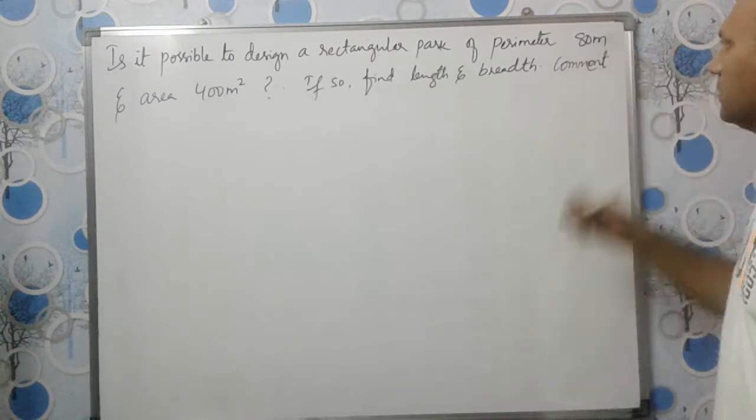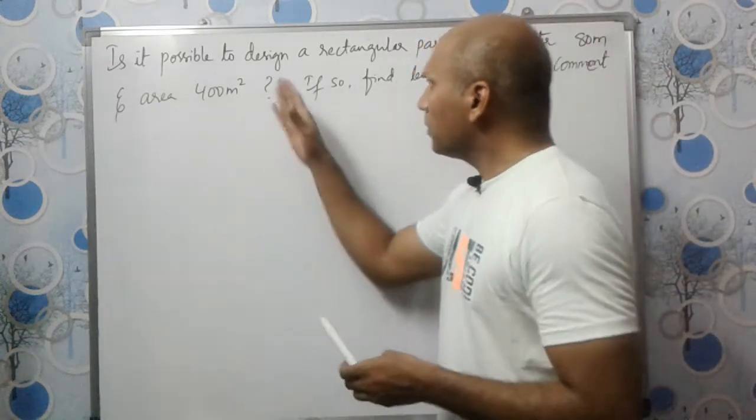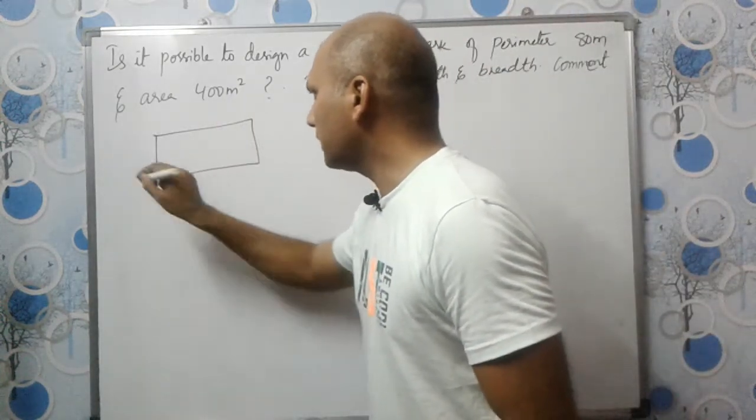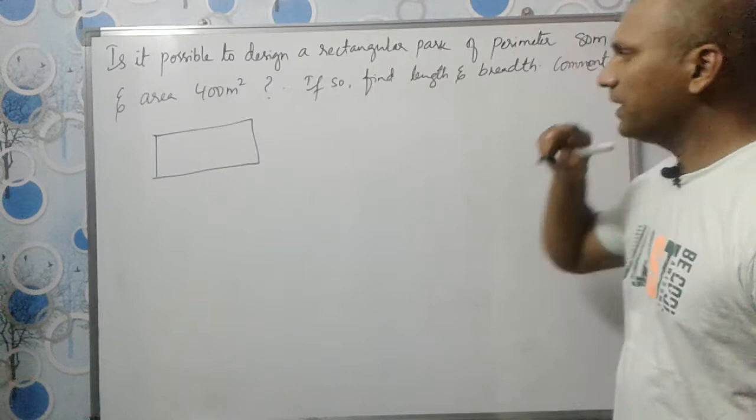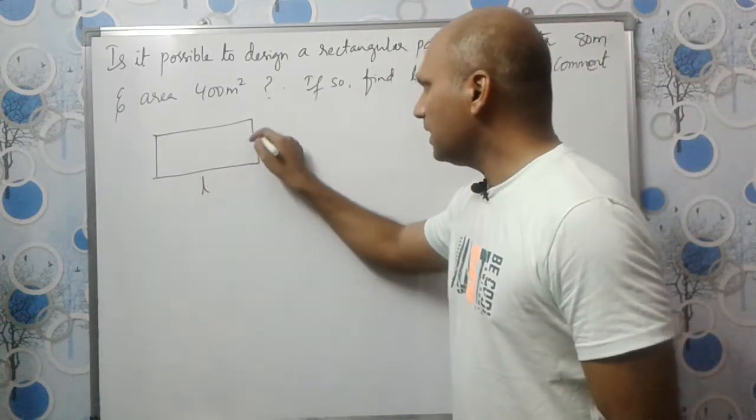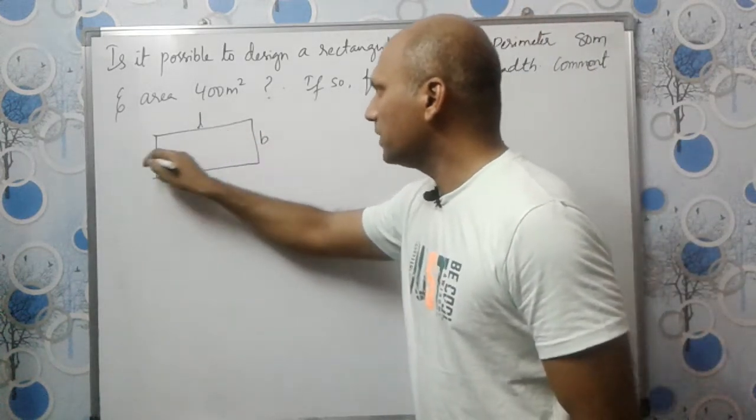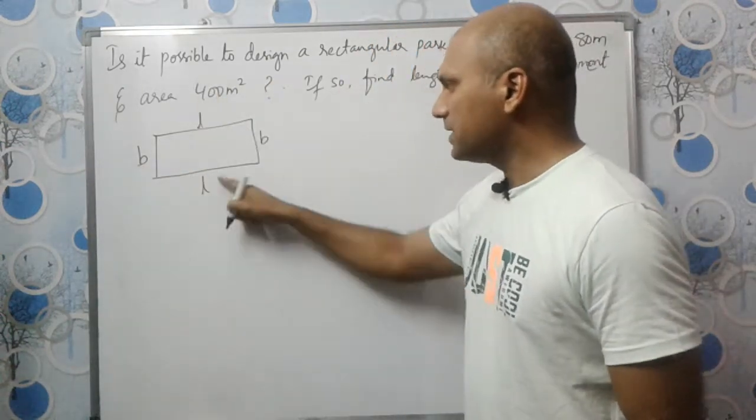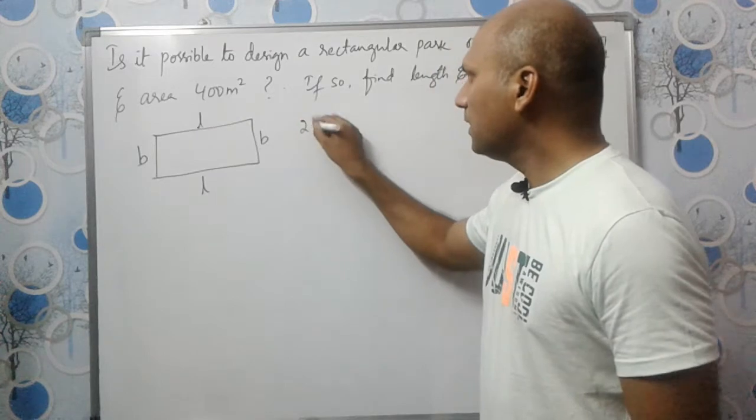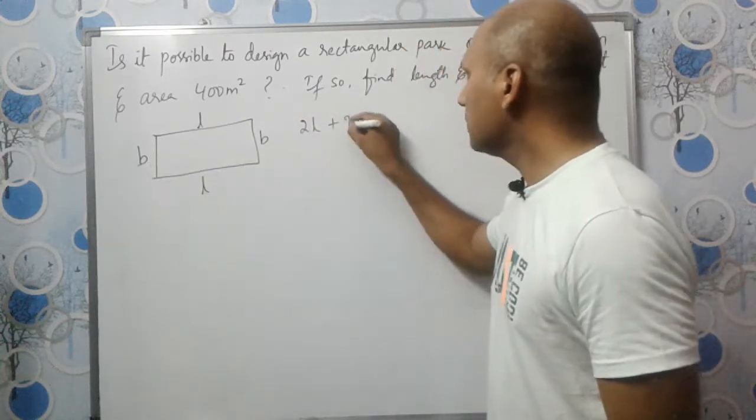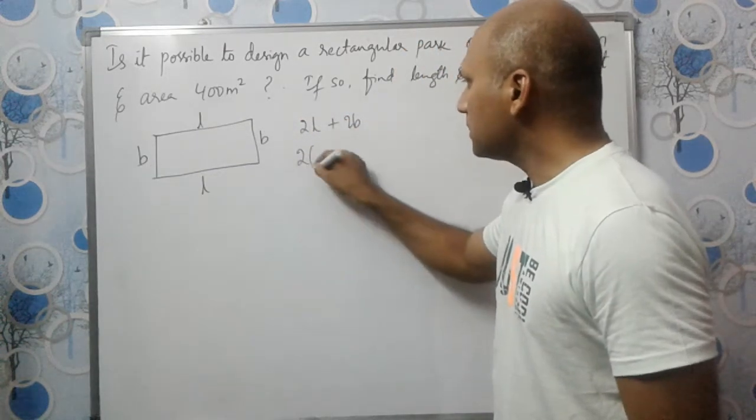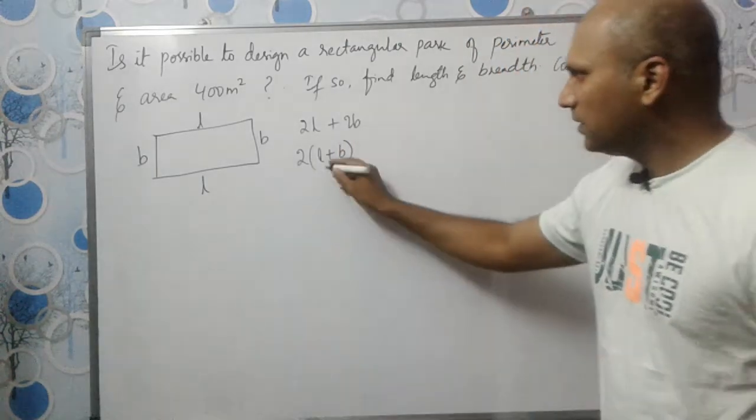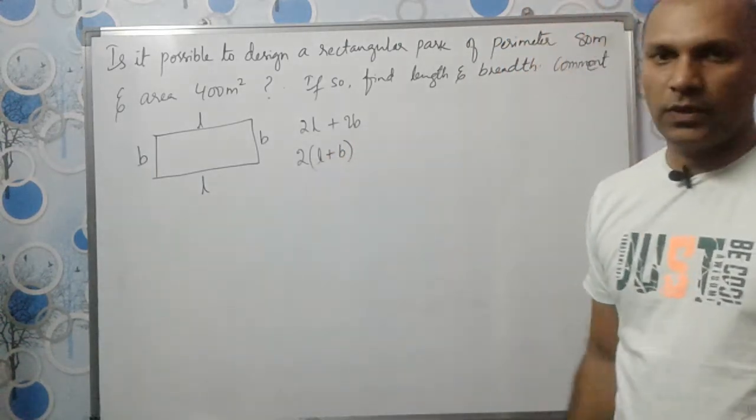Is it possible to design a rectangular park of perimeter 80? If length is L and breadth is B, the perimeter is the addition of all four sides: 2L+2B or 2(L+B). We have learned this formula in the lower classes.